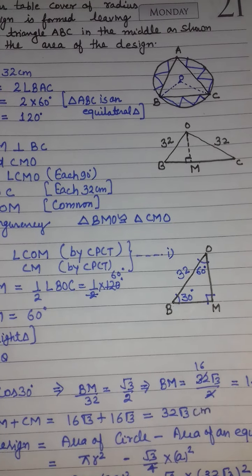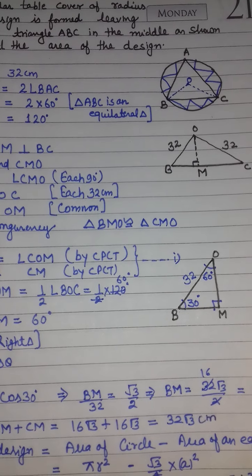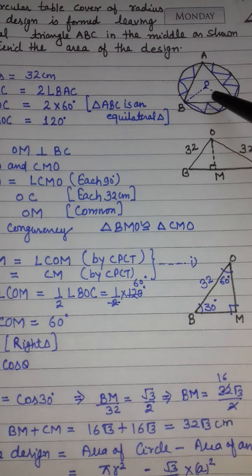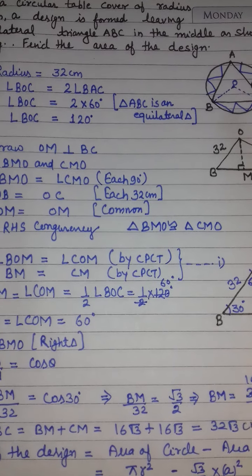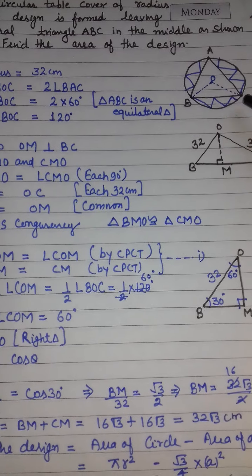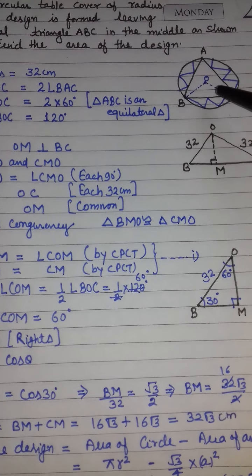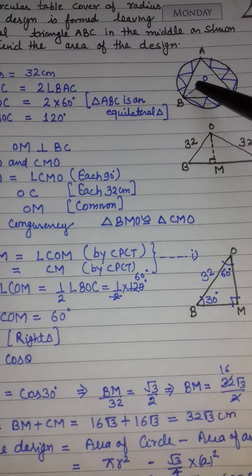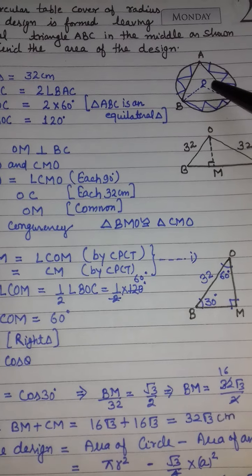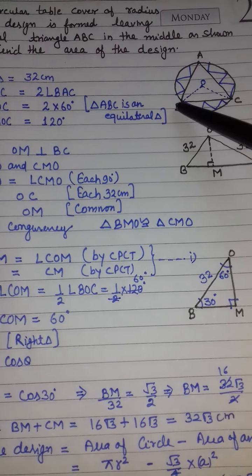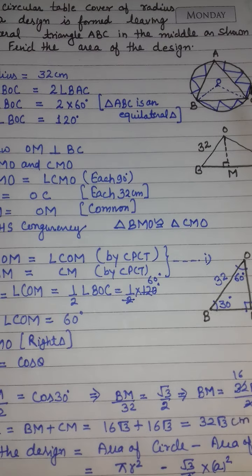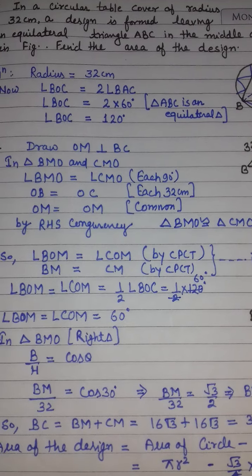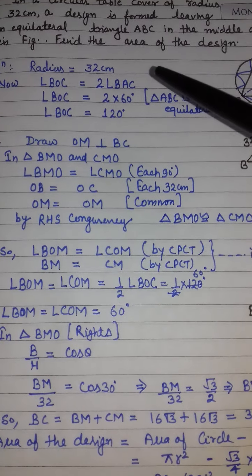Triangle की side find करने के लिए पहले center का angle find करूंगा। Class 9 की एक property है कि circle में center का angle हमेशा arc पर बने angle का double होता है। यही procedure मैंने यहाँ use किया।